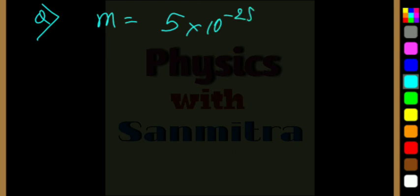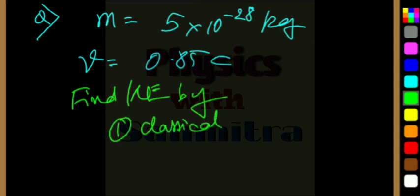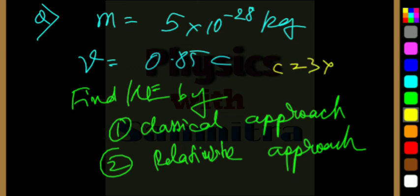So, that's all for this video, and let me give you a problem. This is a particle that is having mass of 5 into 10 to the power minus 28 kg. It is moving with a speed of 0.85 c. Find kinetic energy by number 1, classical approach, that is half mv squared, and number 2 is the relativistic approach. Assume c is equal to 3 into 10 to the power 8 m per s. Please find out the answer and mention in the comments.